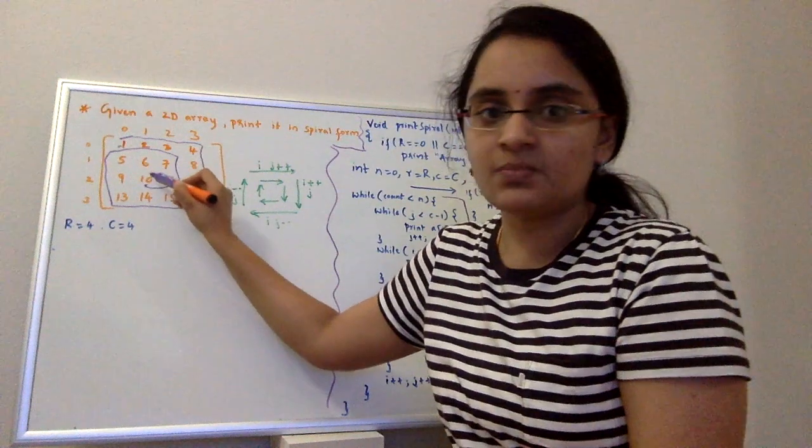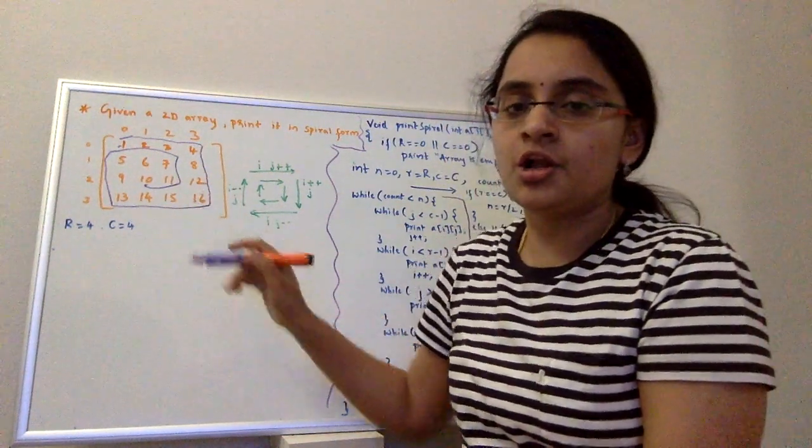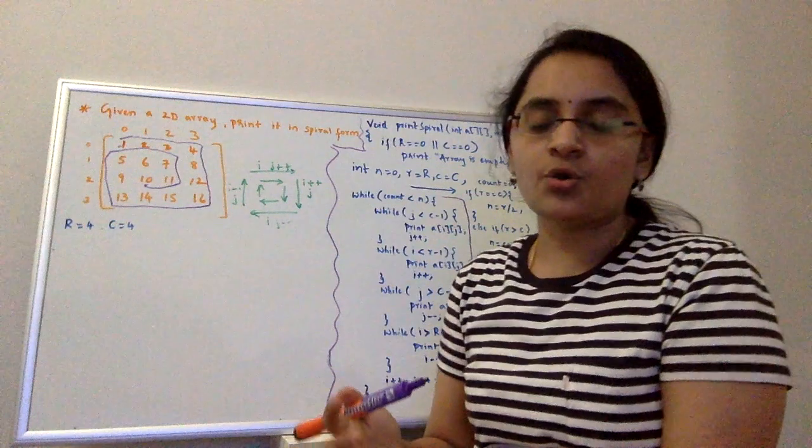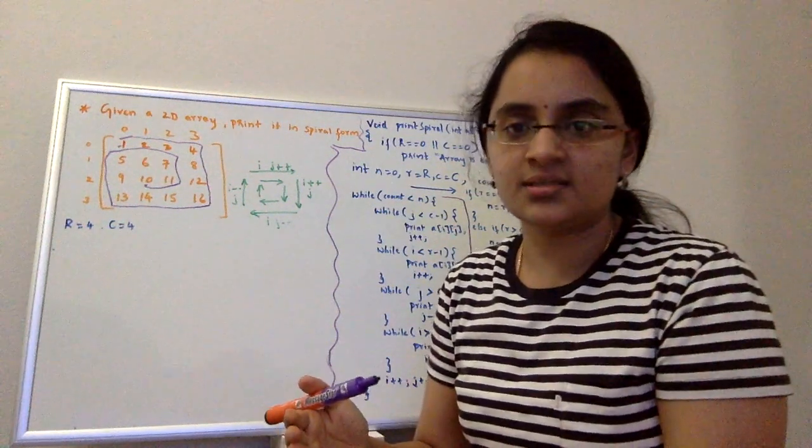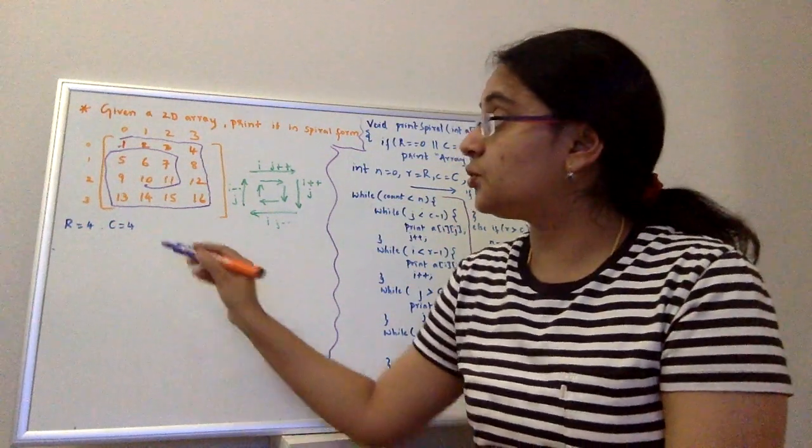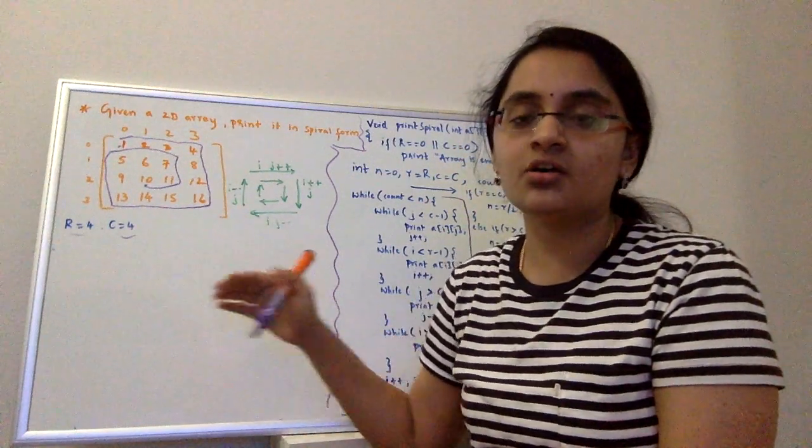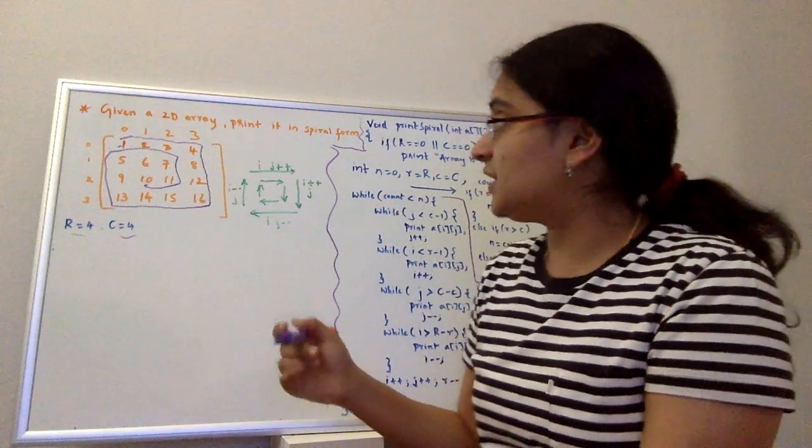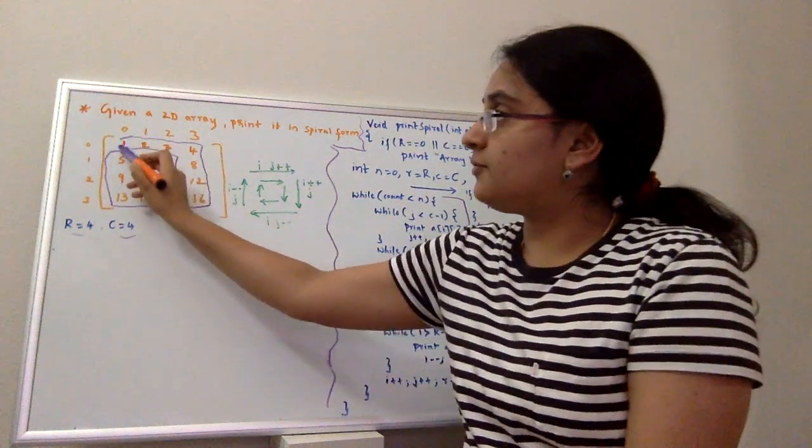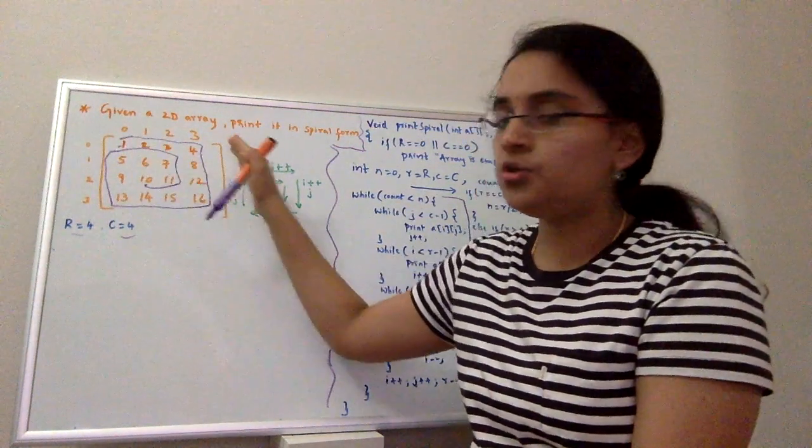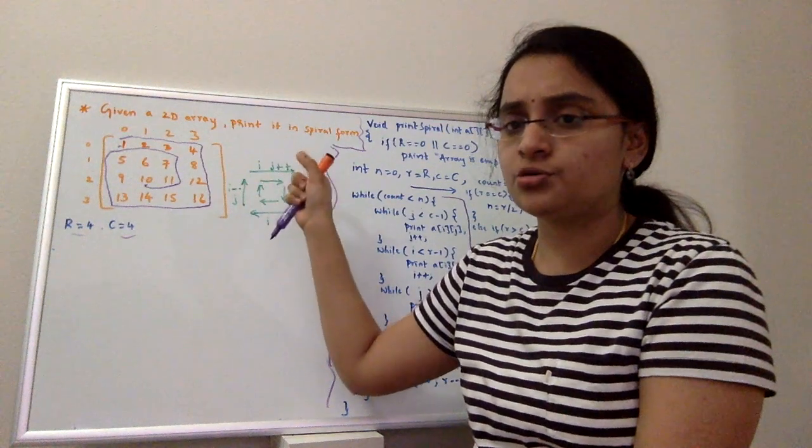This is where the spiral is ending for me in this particular example. When you look at this problem, there's a common pattern that is being followed irrespective of number of rows and columns, whether it is equal or not. When you start from the first index you move to your right, that means you're printing the first row.